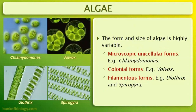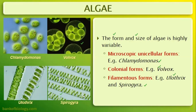The form and size of algae is highly variable — it can range from totally microscopic to totally macroscopic. Algae can be unicellular or multicellular. The smallest organism is Chlamydomonas, which is unicellular algae. In colonial form there is Volvox, where many cells make colonies and grow. The filamentous form includes Ulothrix, which is multicellular and grows in elongated filaments. Spirogyra is also filamentous, but its filaments are differentiated differently.